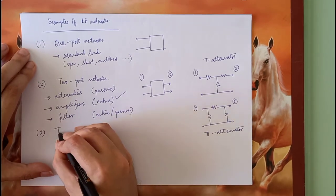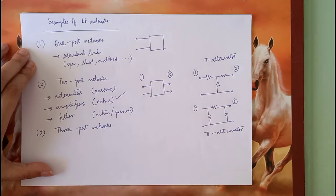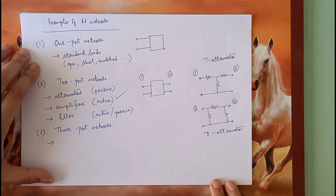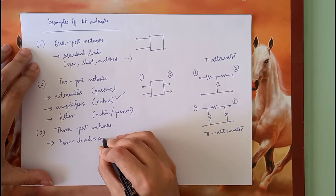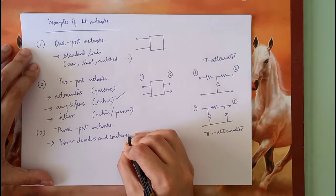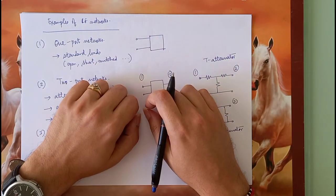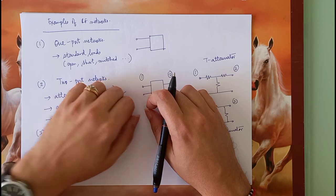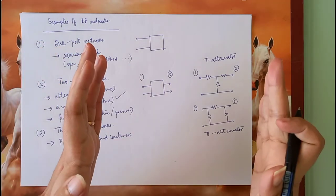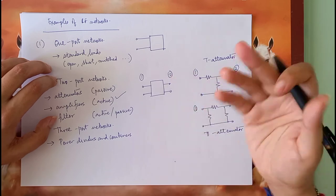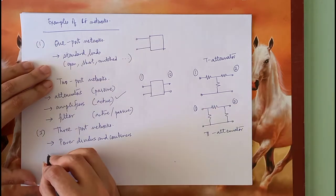Then we come to three-port networks. Examples of three-port networks include power dividers and combiners. A wave comes in and gets divided into two parts of reduced power — that is called a power divider. A power combiner is where two signals come in, their powers get added up.